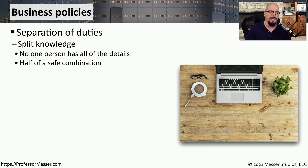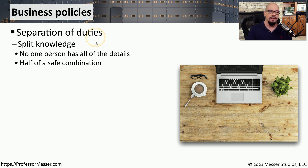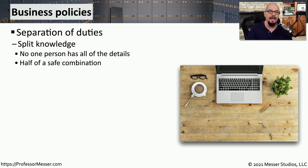Another set of business policies associated with security would be separation of duties. One type of a separation of duty would be split knowledge. That means that one person might have some of the details, and another person would have the other part of the details. You can think of this split knowledge being used with something like a safe combination, where one person might have part of a safe combination, and another person would have the other part. Individual users would not be able to open the safe on their own, and we would need to gather the knowledge from everyone to have the full combination.